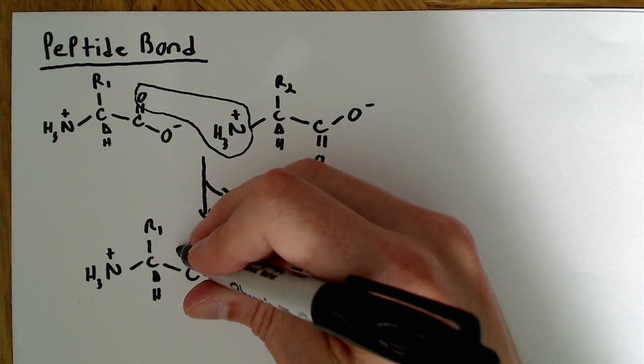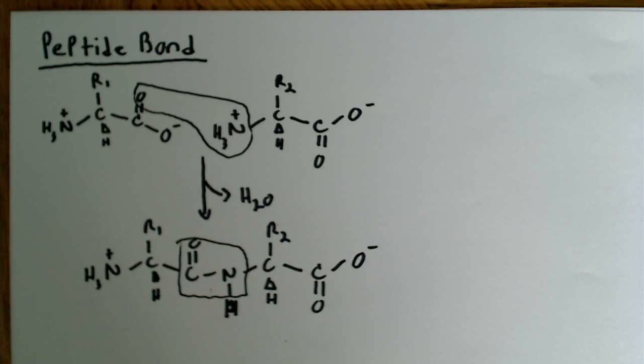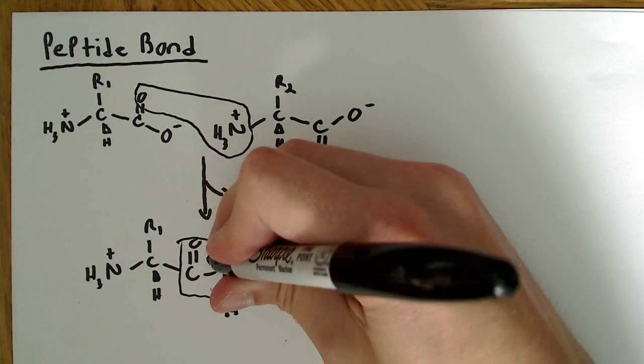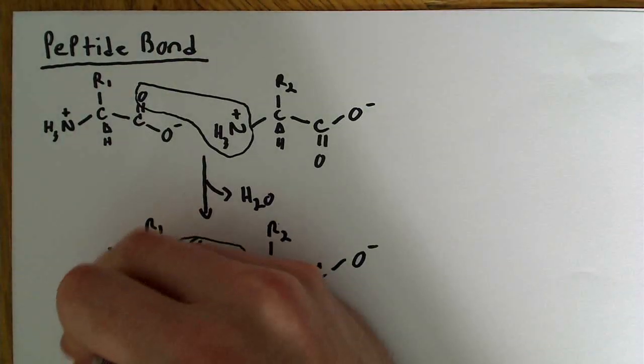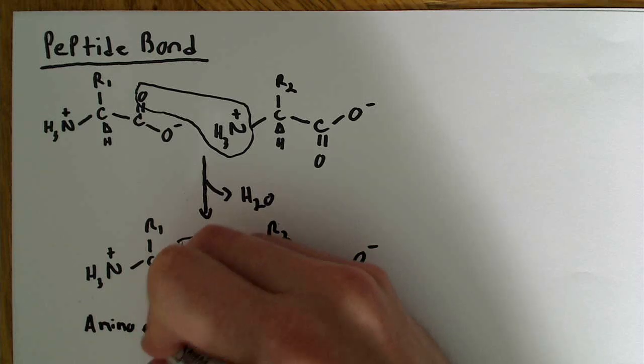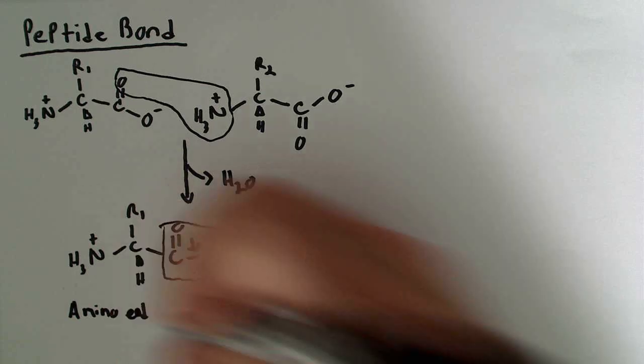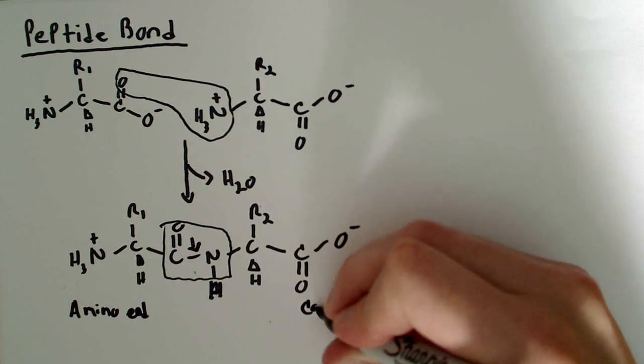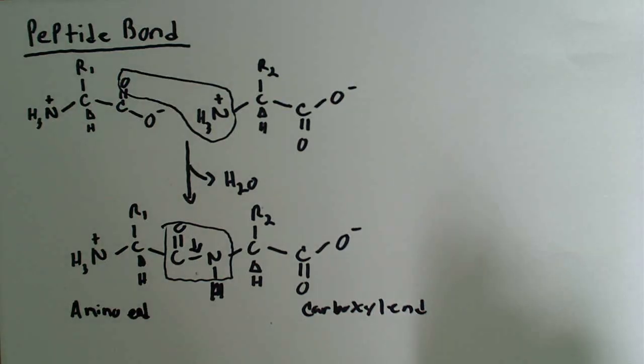And that peptide bond is actually right in this area right here. We formed the peptide bond. And essentially, it's this bond right here. That's the peptide bond. And this is what's called the amino end. And this is what's called the carboxyl end. So we have an amino end and a carboxyl end.